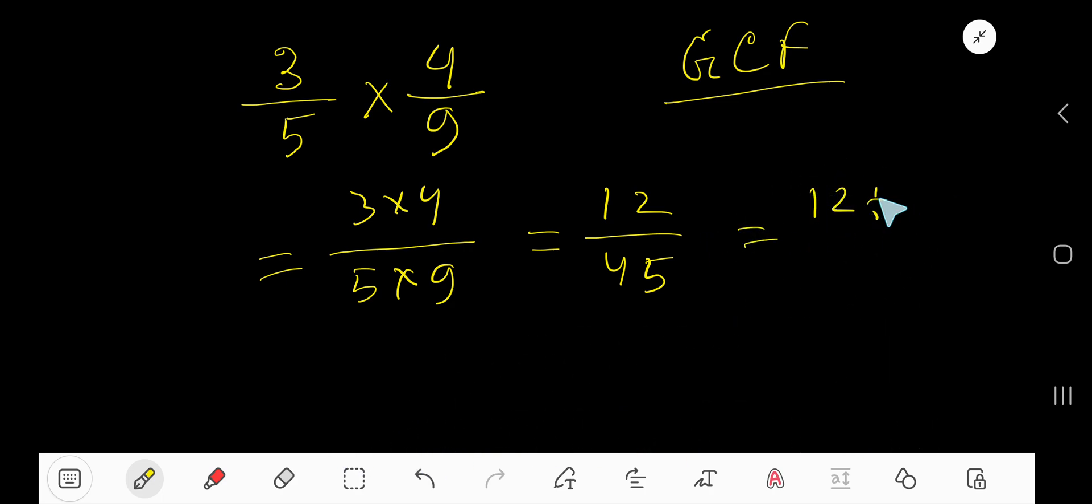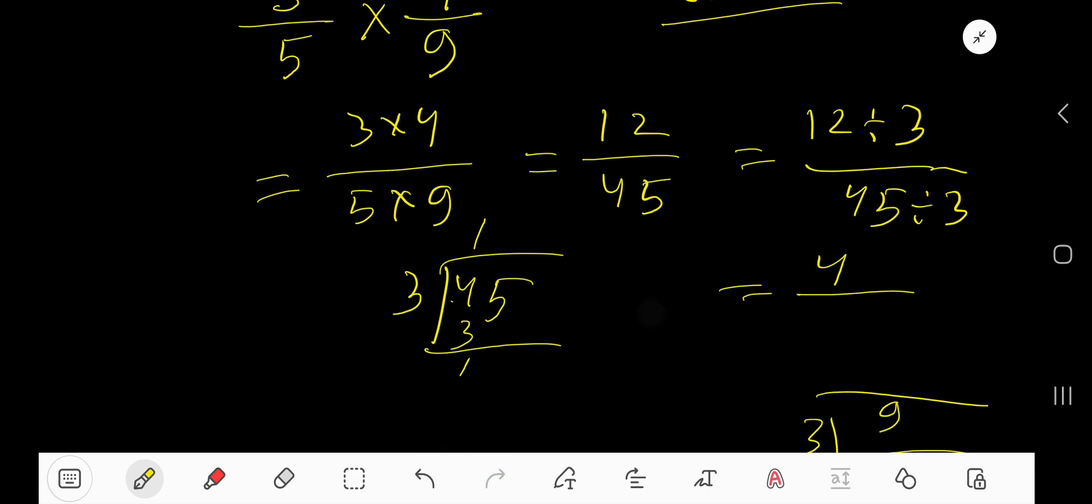Now divide 12 by 3 and 45 by 3. We are getting 4: 12 divided by 3 is 4. And 45 divided by 3: 3 goes into 4 one time, write 1 times 3 = 3, subtract 1, bring down 5. 15, you are getting 15.